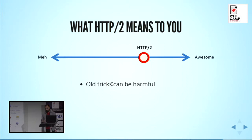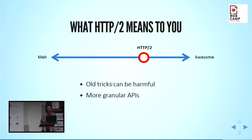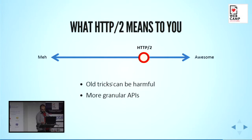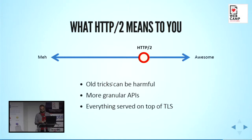For APIs, it might be beneficial to use HTTP/2 long-term because due to smaller latencies you can have more granular APIs. However, if you want to support both protocol versions, you can't have two different APIs — so maybe it will happen when everyone switches to HTTP/2 in 10 years or so. And of course, you have to serve everything over TLS, which previously was not a requirement — but since all major browsers require it for HTTP/2, you have to mind this.